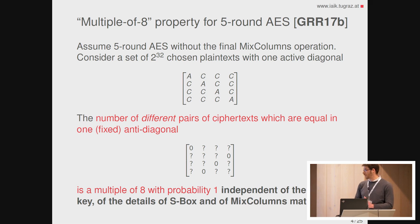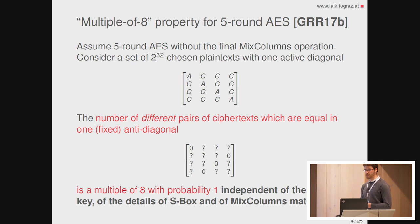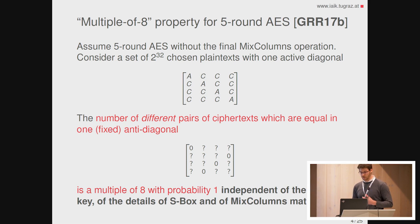Let's consider five rounds of AES without the final MixColumn operation. If the final MixColumn is not omitted, we can just swap it with the final key addition — it's an invertible operation, we can always do that. We take a set of 2^32 chosen plaintexts with one active diagonal, meaning the texts are equal in the second, third, and fourth diagonals and differ in the first one. We consider the corresponding ciphertexts after five rounds, and we can prove that the number of different pairs of ciphertexts that are equal in one fixed anti-diagonal is always a multiple of eight with probability one — independent of the secret key, the S-box, and the MixColumn matrix.